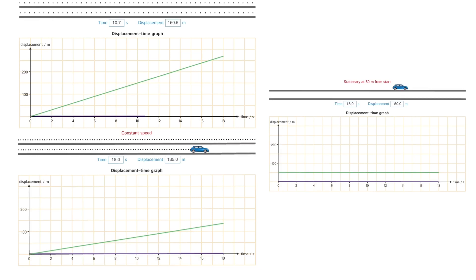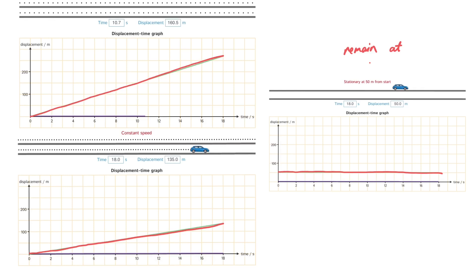Let's compare these three graphs. You can see that the first graph has a steeper slope compared with the second one with a shallower slope. Then the third one is a horizontal line, which means the slope of it is zero. So a horizontal line on a displacement-time graph means that the object is at rest.